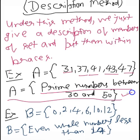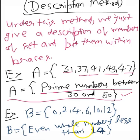This method is quite rarely used, but we should have enough understanding of it. For another example, set B = {0, 2, 4, 6, 10, 12} — these are all even numbers. Its description method form would be: {even whole numbers which are less than 14}.